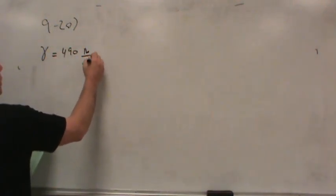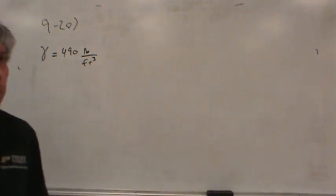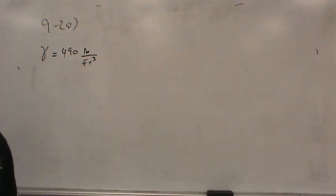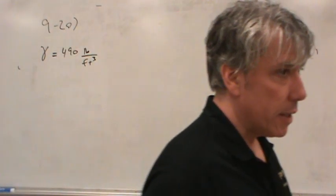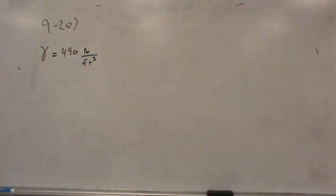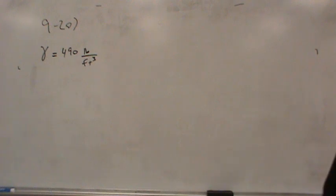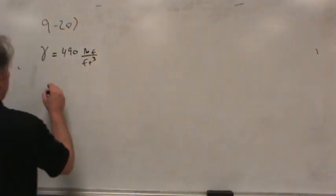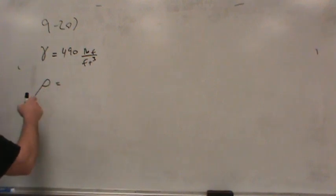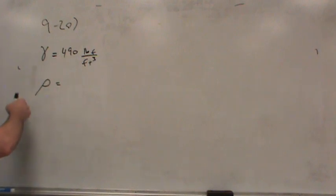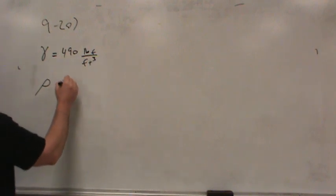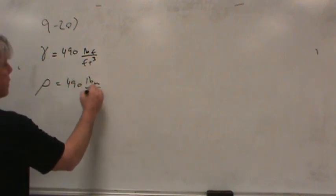Now it's pounds per cubic foot. So is that pounds mass or pounds force? Mass per volume is known as density. Weight per volume is known as specific weight. So this is actually pounds force — be careful. If it's pounds mass, we use another symbol. What is it called? Rho. I really appreciate it — I can't tell you how many students call this P. It's not P; this is rho.